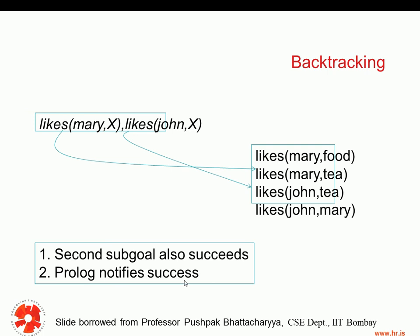This is a simple example introducing the concept of backtracking, which is the heart of the Prolog algorithm — the control part. Remember, when we were introducing logic programming, we said it consisted of two parts: the logic and the control. As Prolog programmers, we take care of the logic, which is in the form of these four facts in this simple program. The control part is taken care of by the abstract machine — the Prolog interpreter — and part of that control is this backtracking mechanism.